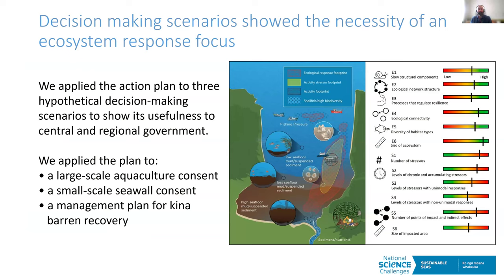Within the guidelines, we applied this action plan to three hypothetical decision-making scenarios to show its usefulness. For each example there's a corresponding figure showing the proposed activity footprints, the associated stressor footprints, and the ecological response footprints — all of which occupy different spatial extents — plus a bar chart showing the associated stressor and ecological principles at corresponding levels. The three examples were a large-scale aquaculture consent, a small-scale seawall consent, and a management plan for Kinnebaran recovery. I'll cover the aquaculture example in a little more detail.